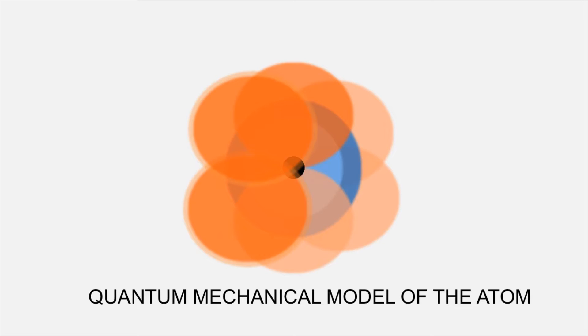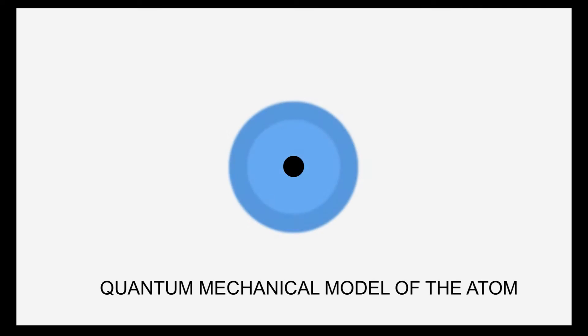Electrons are most stable close to the nucleus, so they're more likely to be there. Electron clouds are not spherical orbits; they are volumes where electrons are most likely to be 90% of the time.